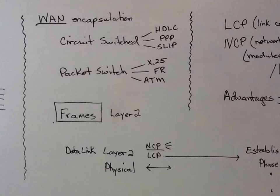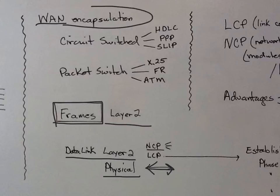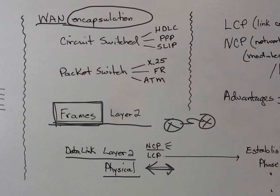LAN encapsulation: when we talk about frames, we're talking about layer two — the data link layer. Then you have the physical layer that actually sends the information. WAN encapsulation is how we encapsulate here. You can have two routers use one protocol to connect, and these two use something different.